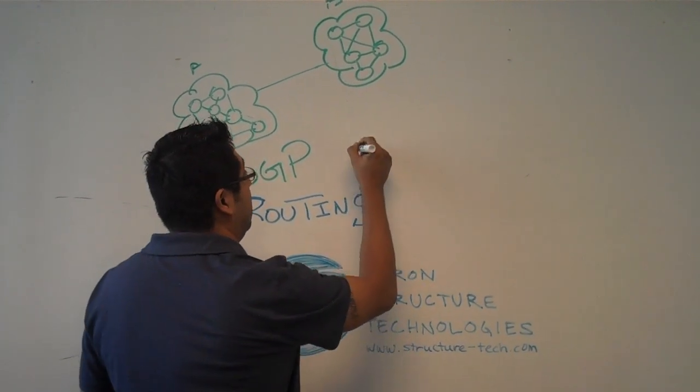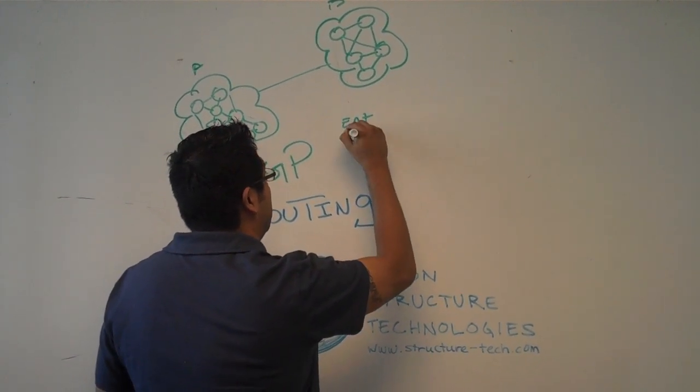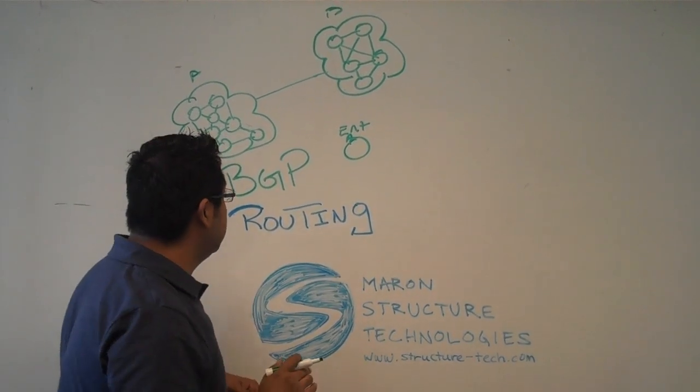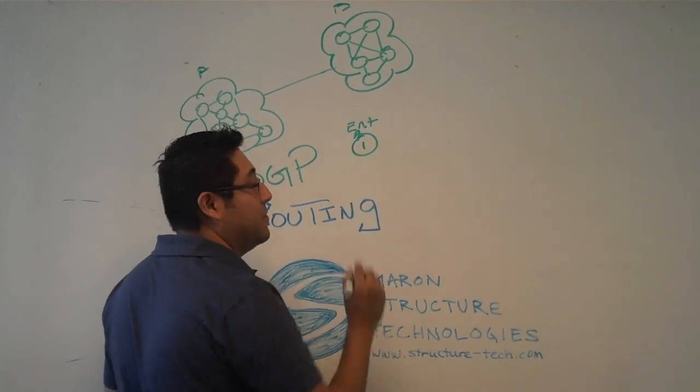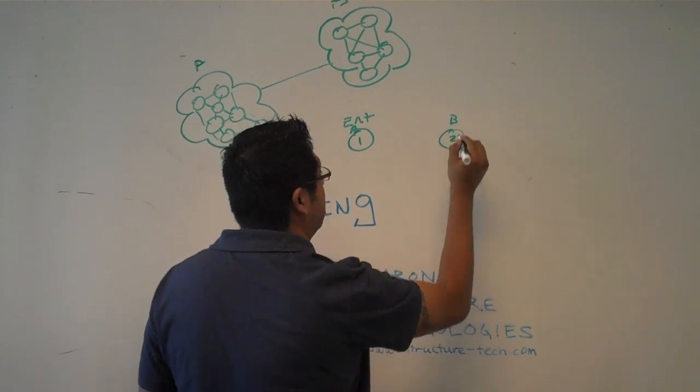If we look at this at a very minimal level, we have Enterprise A here with their AS number, which all BGP-based routers must have, which stands for an autonomous system. In this case, we'll just give it 1, and then we'll have Enterprise B, and we'll give him 2.